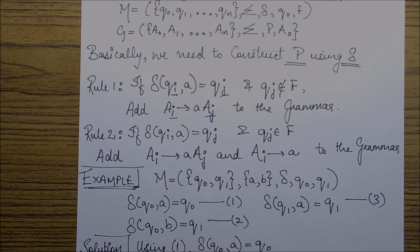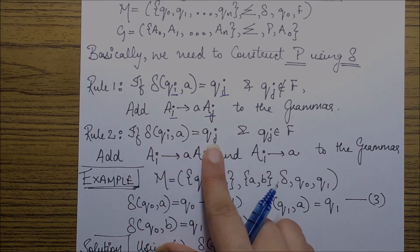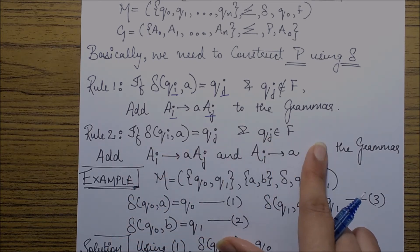Similarly, rule 2 states that if there is an entry delta qi a goes to qj, where qj is a final state.